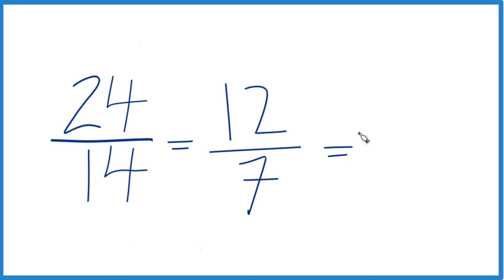7 goes into 12 just one time. One times 7 is 7, and then you have 5 left over. Bring that 7 across, and that's your mixed number.